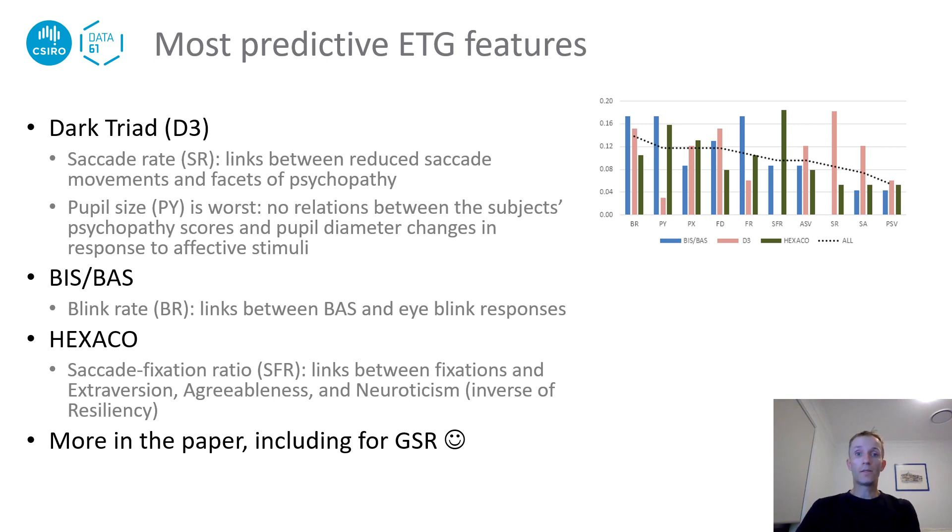Turning to BIS-BAS, the blink rate was the most predictive feature, which is supported by previous research showing links between BAS and eye blink responses. Similarly, the saccade fixation ratio SFR dominated features for HEXACO, which is supported by existing findings of links between fixations and a number of HEXACO traits: extroversion, agreeableness, and neuroticism, which is the inverse of resiliency.